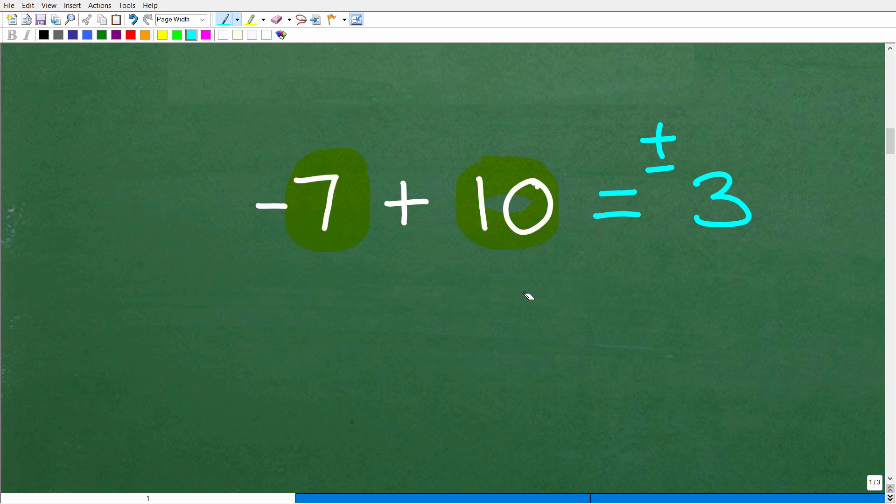To answer that question, we look at these numbers and ask which is the larger number. 10 is greater and the sign of 10 is positive. So our final answer is a positive 3.